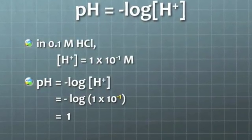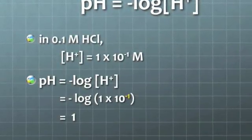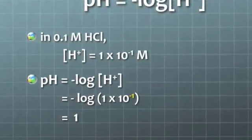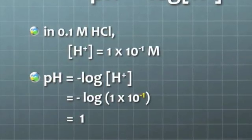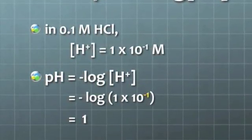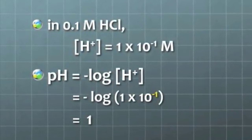Acids, on the other hand, have a much higher concentration of H-plus. For example, 0.1 molar HCl solution has 1 times 10 to the minus 1 moles of H-plus for every liter. And so the pH of that, taking the negative logarithm of 1 times 10 to the minus 1, is 1.